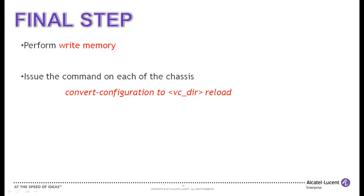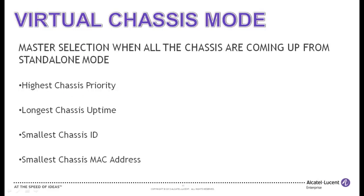The convert configuration command creates a vcboot.cfg and a vcsetup.cfg file on the virtual chassis directory. The vcsetup.cfg file contains the virtual chassis information, and the vcboot.cfg file holds the configuration information of the switch. Once the convert configuration command is applied, all the participant chassis reload and come up in virtual chassis mode.